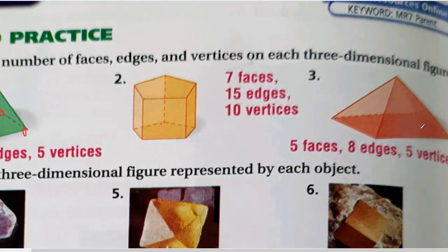How many faces? We have the face on the bottom. From each side of that bottom face, we have one face going up — one, two, three, four. So we have one face on the bottom and four on the sides, giving five faces.